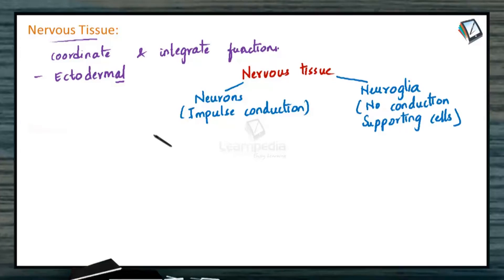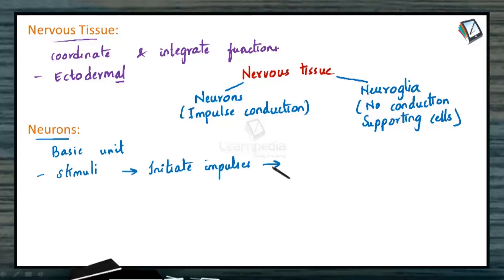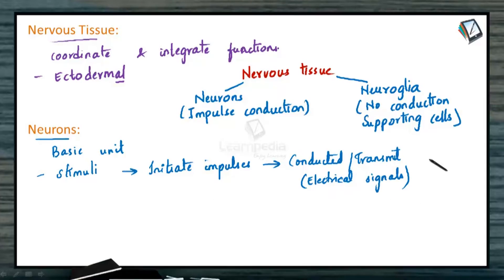Neurons are the basic unit that make up the nervous tissue. As they are involved in impulse conduction, they need to pass on these impulses. These cells are sensitive to stimuli. Once they receive the stimuli, the impulses are initiated and then conducted or transmitted as electrical signals. These electrical signals that neurons pass are referred to as action potentials. This action potential would be passed on to another neuron, or it might be conducted through a muscle tissue or to any kind of glands.